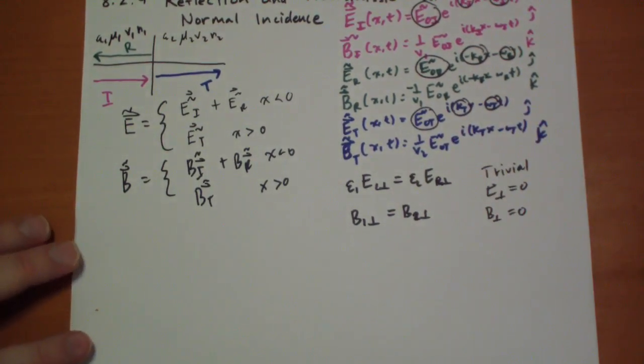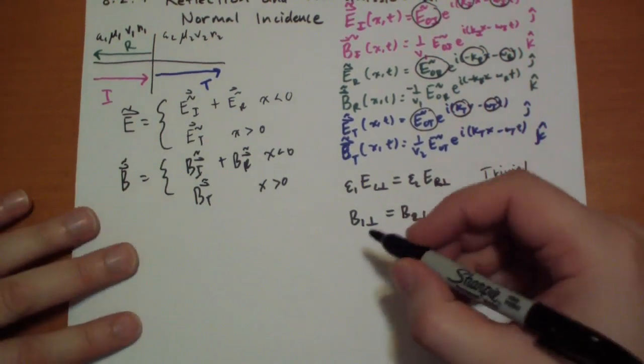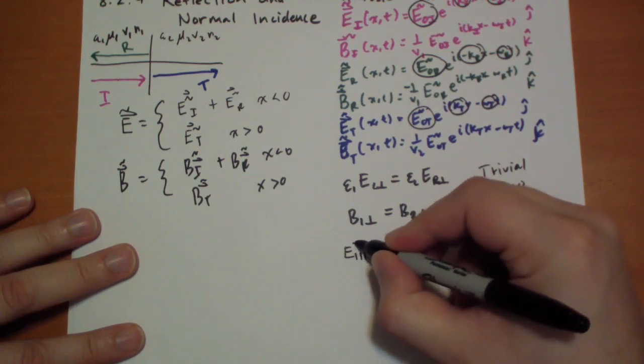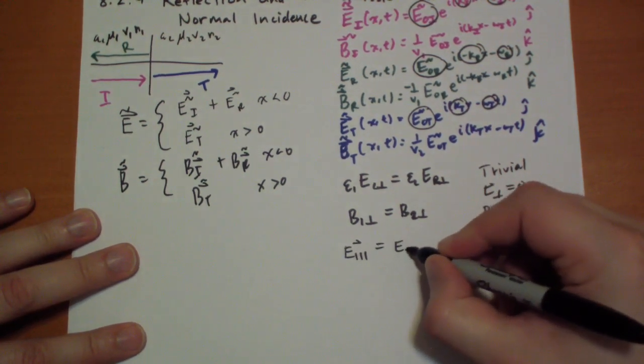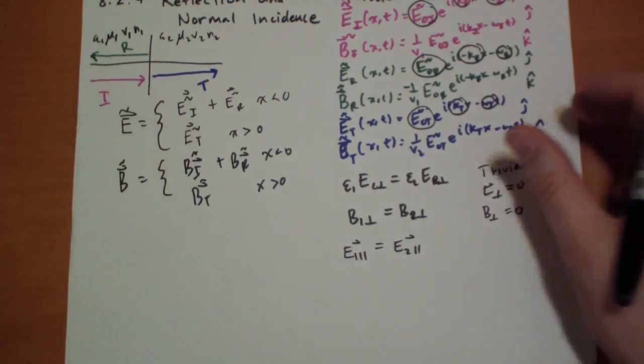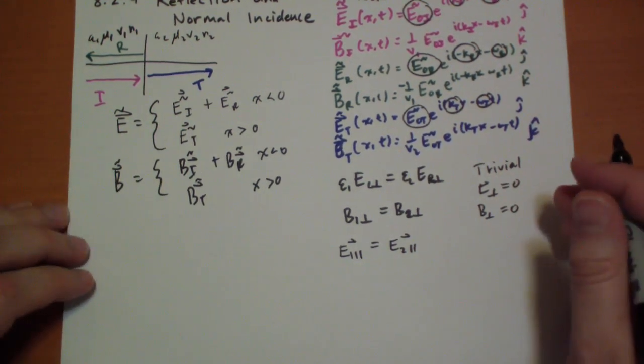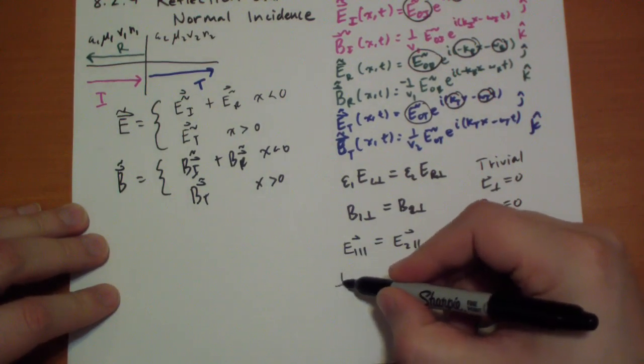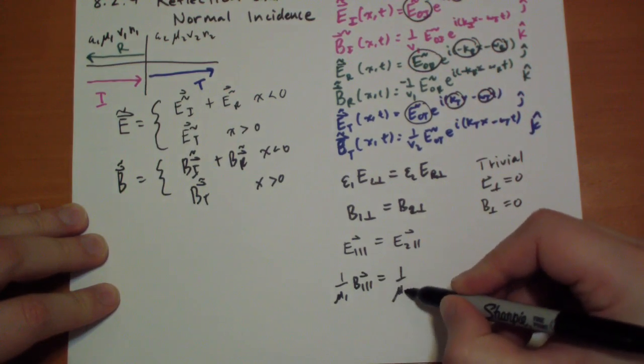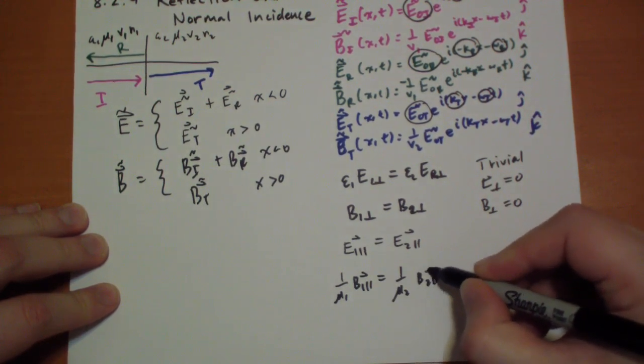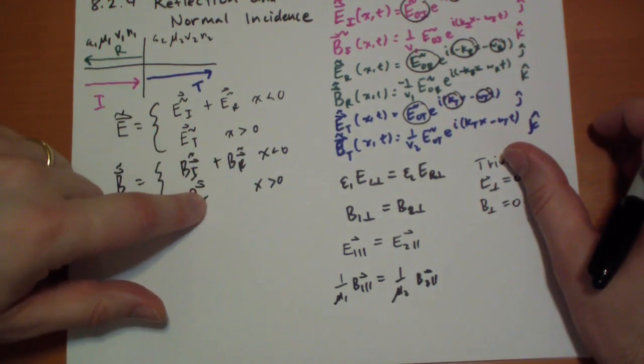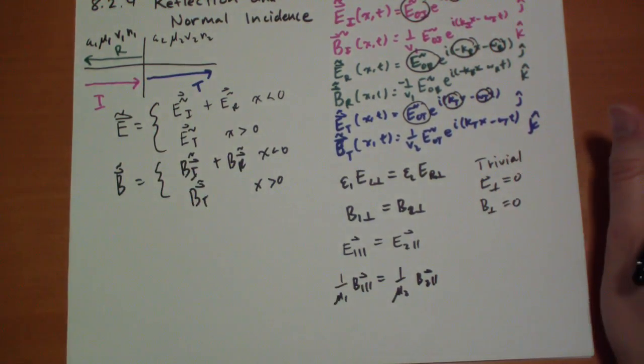The one that gets interesting is this one that says your parallel E field has to equal the parallel E field on the other side. And so this says basically these guys have to equal these guys on either side. And then we have the other one that says 1 over mu1 B1 parallel has to equal 1 over mu2 B2 parallel. And that's going to be satisfied, basically saying these guys have to equal these guys, but with the coefficients there.